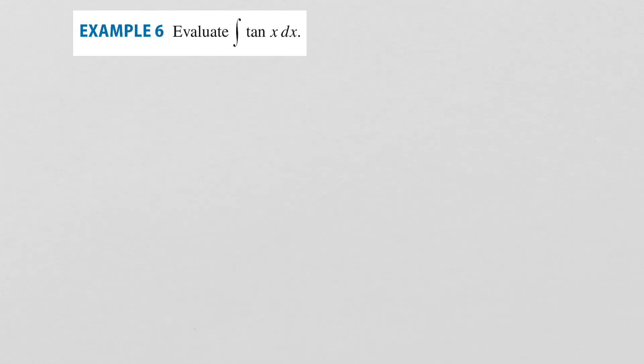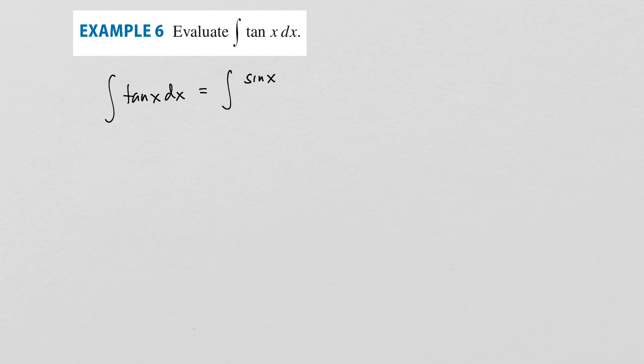This next one is deceptively not simple: how do we integrate tangent of x? We don't know the antiderivative of tangent — we know the derivative of tangent is secant squared, but this is the antiderivative. With trig functions, it's often the case that you need a trig identity. Tangent of x equals sine of x over cosine of x. As a general rule, when you have a fraction, u is likely something in your denominator.